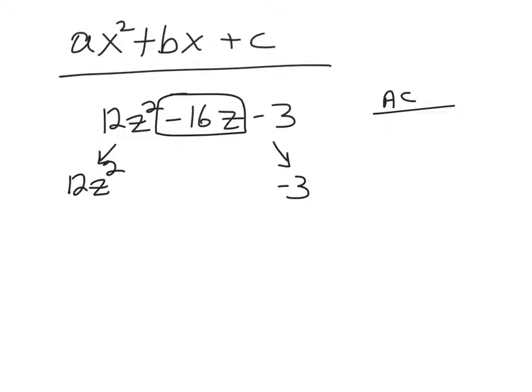Here's how we find the combination that we need. We take the a times the c. The a is the 12. The c is the negative 3. We're going to take 12 times negative 3, which is negative 36. So we're going to list down all the factor pairs of negative 36. All the things that I can multiply together and get negative 36. Now, for some students, listing down those factor pairs is second nature. Other students have trouble figuring out what all the factor pairs are. So here's a way to guarantee that you get all the factor pairs.